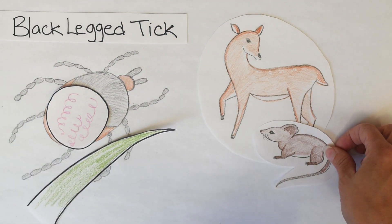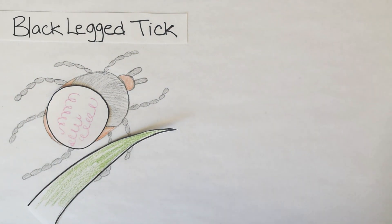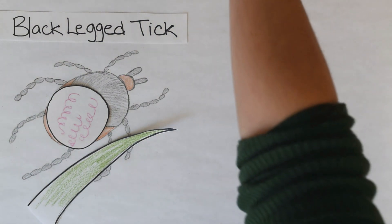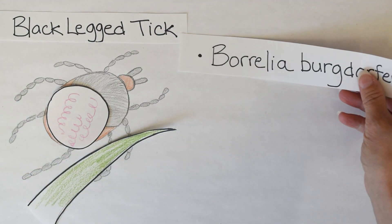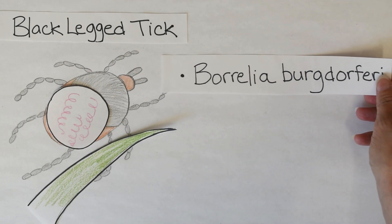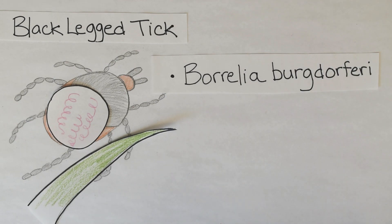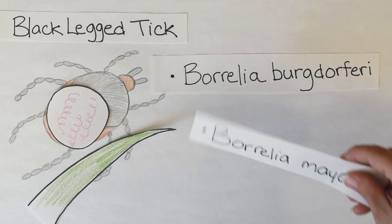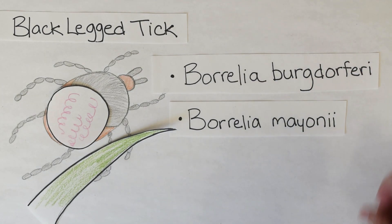The bacteria has been transferred from the woodland animals to the tick. The most common bacteria is called Borrelia burgdorferi — it's the most common Lyme disease-causing bacteria. The second most common is Borrelia mayonii.